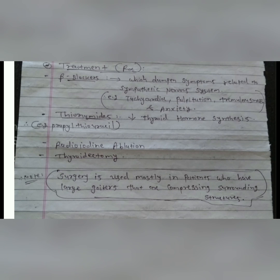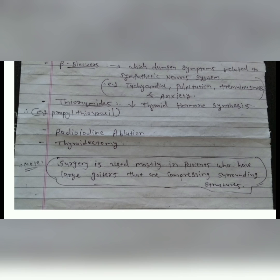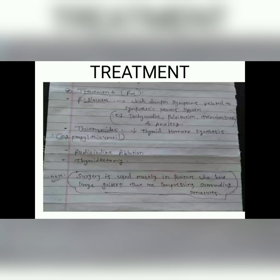The drug thionamides — mainly propylthiouracil — is used to decrease thyroid hormone synthesis. There is also radioiodine ablation and thyroidectomy as a surgical option. Surgery is used mostly in patients who have a large goiter compressing surrounding structures. Before surgery, propylthiouracil is used to decrease blood flow to the gland and shrink it, making it easier to remove with less bleeding and lower risk. Thank you for watching, have a nice day.